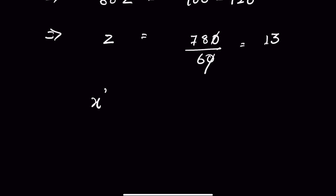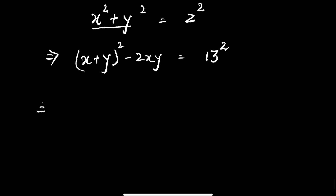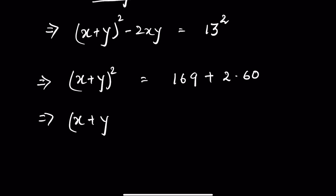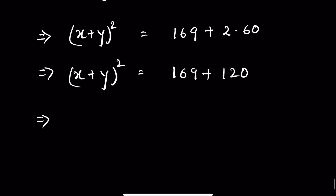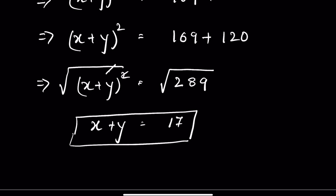Again, the Pythagorean theorem says X squared plus Y squared equals Z squared. We can rewrite X squared plus Y squared as X plus Y whole squared minus 2XY, which equals Z squared, that is 13 squared equals 169. So X plus Y whole squared equals 169 plus 2 times XY, which is 60, giving 169 plus 120 equals 289. Taking the square root of both sides, X plus Y is equal to 17. Let this be equation 3.